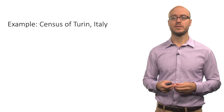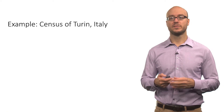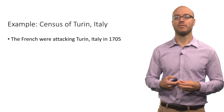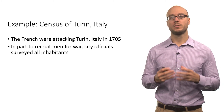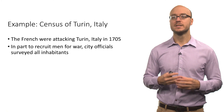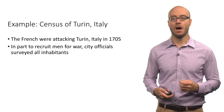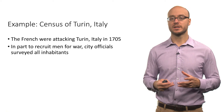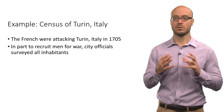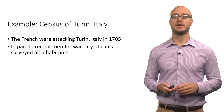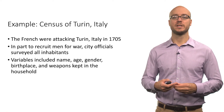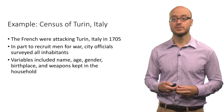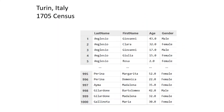Here's an example we'll use in this course: a census of Turin, Italy in 1705. The French were attacking Turin, and city officials surveyed all inhabitants to recruit people for war. When you conduct a census, you collect data on all cases. The variables included name, age, gender, birthplace, and the weapons kept in the household. Here is the dataset for the 1705 census of Turin, Italy.